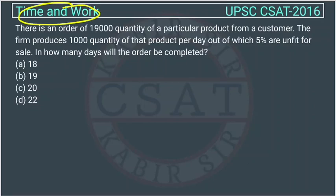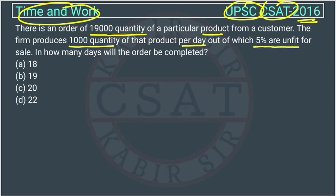This is a time and work question asked by UPSC in their CSAT paper of 2016. There is an order of 19,000 quantity of a particular product from a customer. The firm produces 1,000 units of that product per day, out of which 5 percent are unfit for sale. In how many days will the order be completed? This is a very easy question.